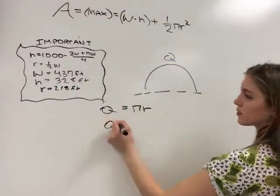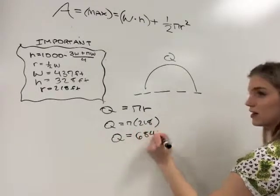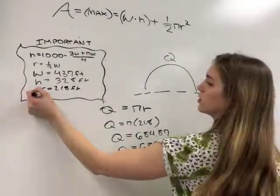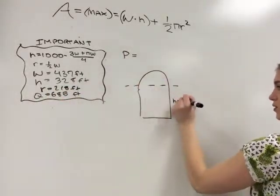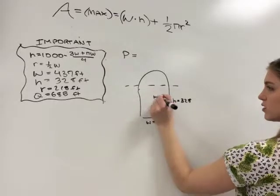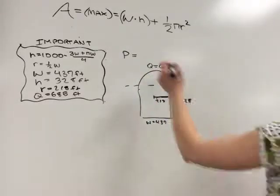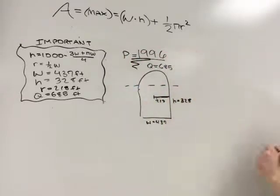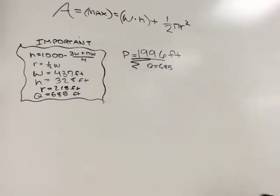To find Q, we are going to need the semicircle formula. For this, we will use πr, which is half of πr squared for a regular circle. And that will equal 685 feet. After finding all of our dimensions and lengths, we come to a perimeter of 1,996 feet.